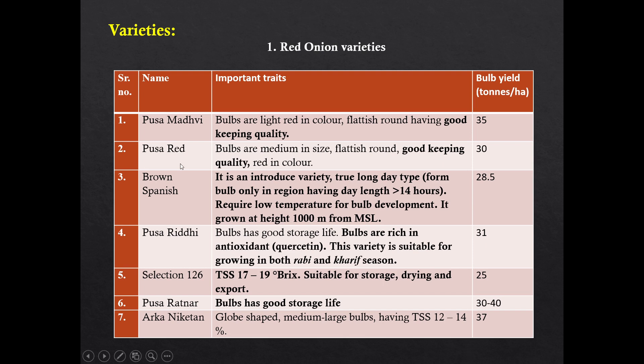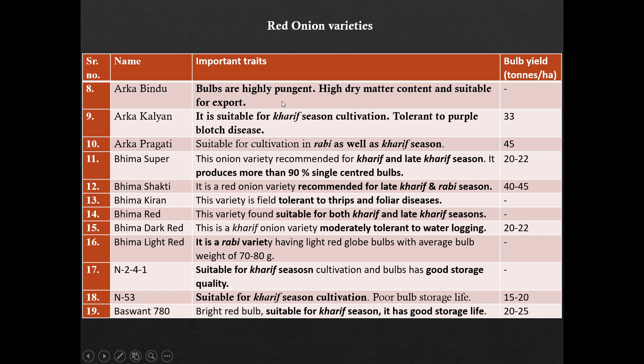Red onion varieties: Pusa Madhavi is having good keeping quality. Pusa Red is also having good keeping quality. Brown Spanish is a long day red type variety — it requires low temperature and 14 hours daylight for bulb formation, and is grown at a height of 1000 meters from mean sea level. Pusa Red is rich in antioxidants and suitable for growing in both rabi and kharif seasons. Collection 126 is having high TSS and suitable for storage, drying, and export. Pusa Ratna is having good storage life. Arka Niketan is having average bulb yield of 37 tons per hectare. Arka Bindu is also a red bulb onion — it is highly pungent, high in dry matter content, and suitable for export.